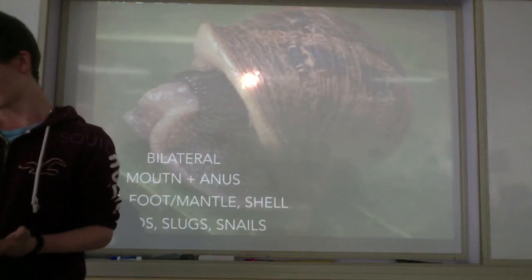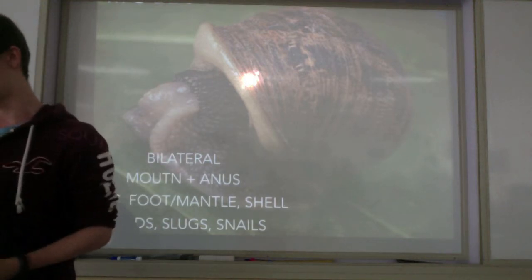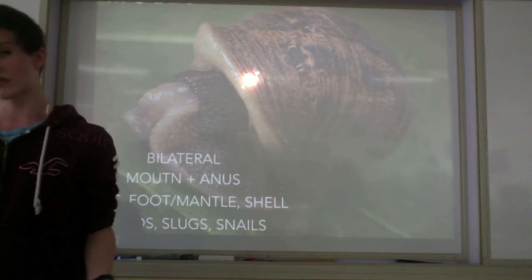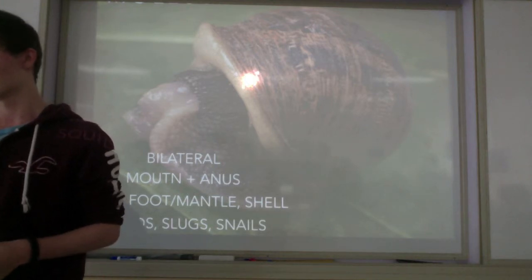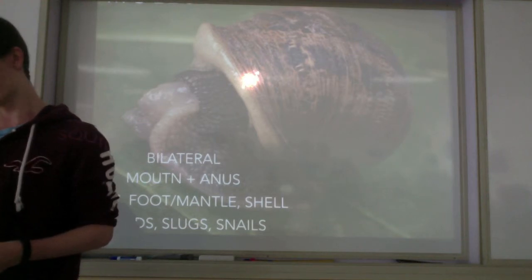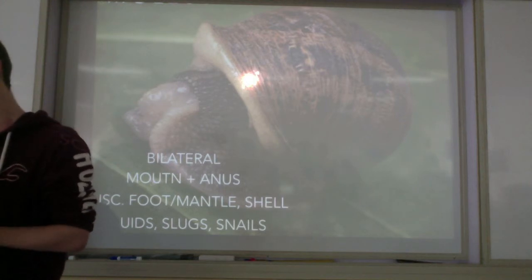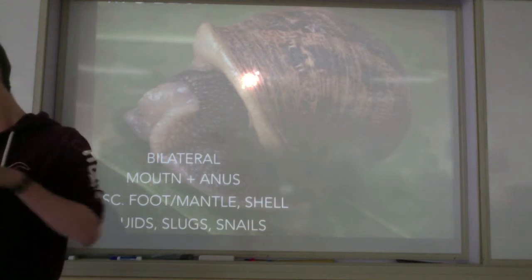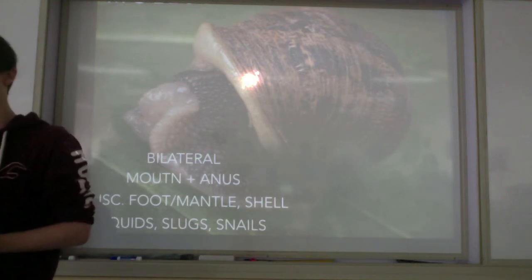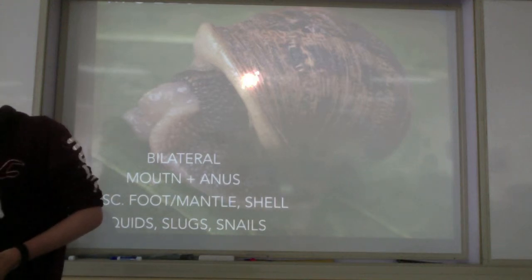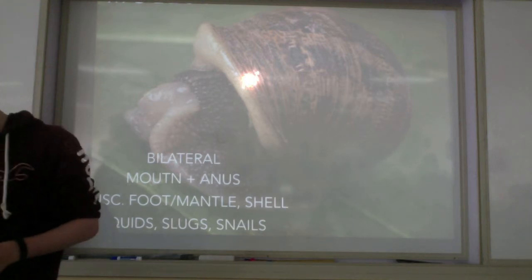Next we have Mollusca. They have bilateral symmetry, a mouth and anus, and defining features include a muscular foot and the ability to have a shell. Examples are squids, slugs, and snails. Giant squids float around at the bottom of the ocean and can be up to 13 meters long. There are also venomous snails that kill their prey using a harpoon tooth. Some predator snails hunt prey by following its scent through rivers and up trees. Sea-living slugs eat jellyfish only to collect their nettle cells and use them for their own defense.